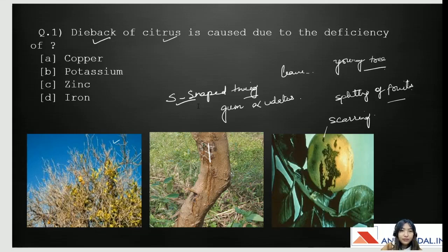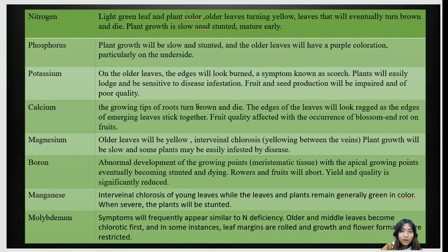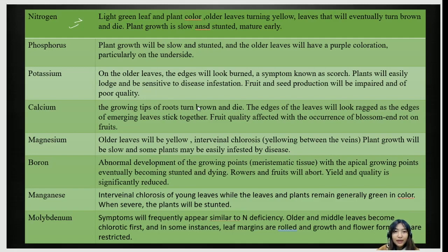I've made a table highlighting some nutrients and their corresponding symptoms. For nitrogen, the symptoms include light green leaves and plant discoloration — older leaves turn yellow, eventually brown and die. Plant growth is slowed, there is stunting, and eventually the plants mature early.